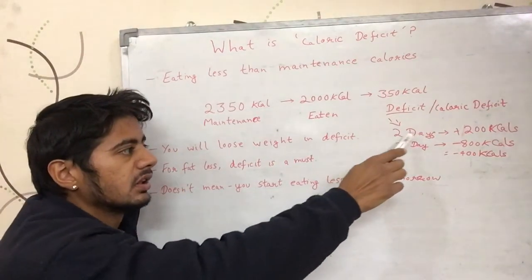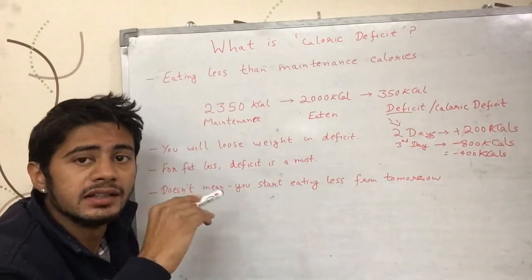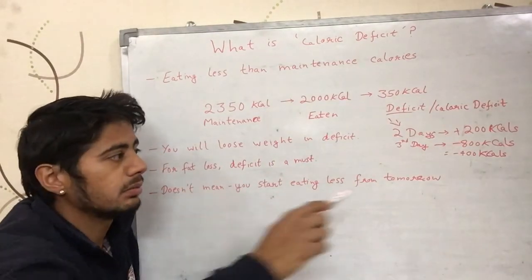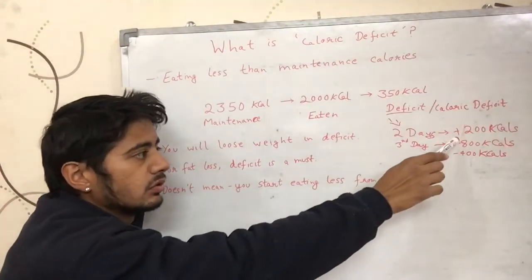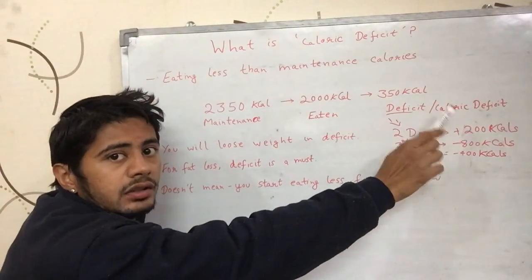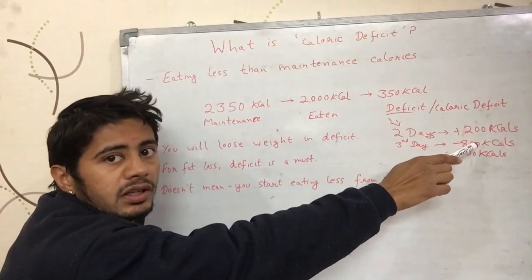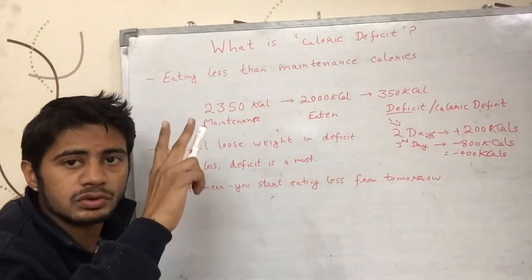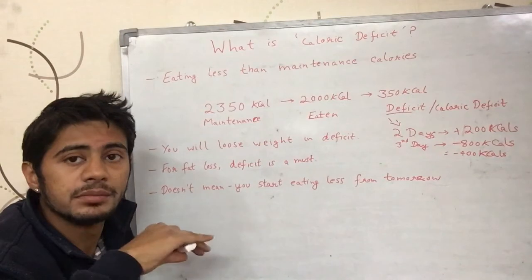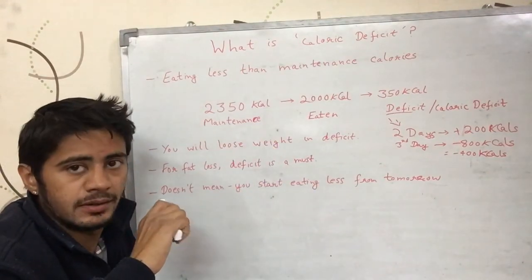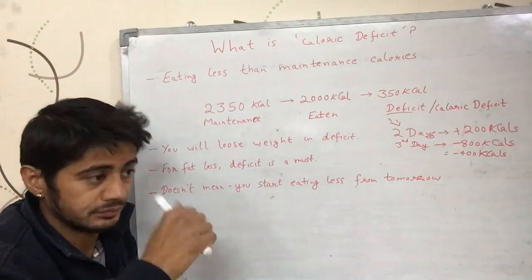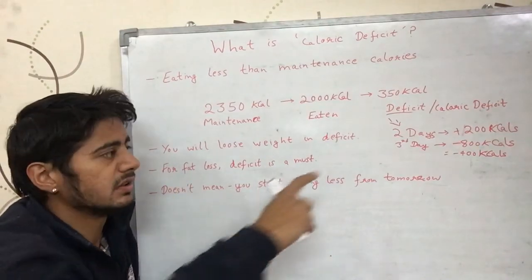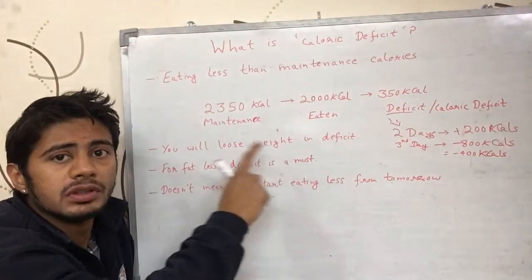For example, you can be 200 calories under your maintenance on one day, but the next day you eat 800 calories under your maintenance. Then over two days you have eaten 400 calories under maintenance on average. In this way, if you stay in a deficit over multiple days, your weight will be less.